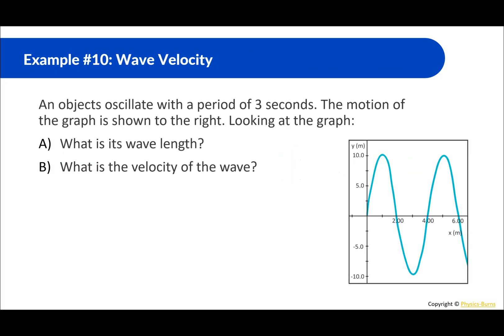An object oscillates with a period of 3 seconds, and the motion is shown on a graph. What is the wavelength? Wavelength is the distance for a full cycle — reading the graph, that looks like 4 meters. What is the velocity? Velocity equals wavelength divided by period: 4 divided by 3 equals 1.33 meters per second.